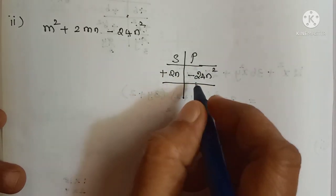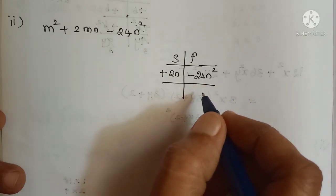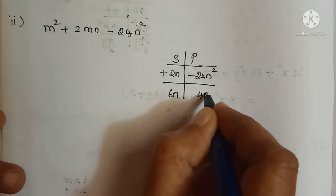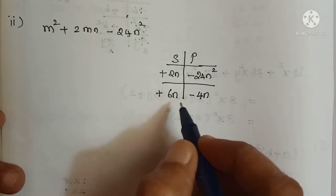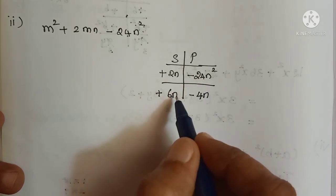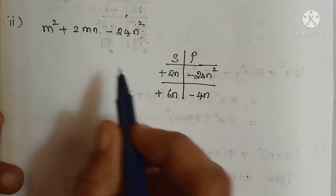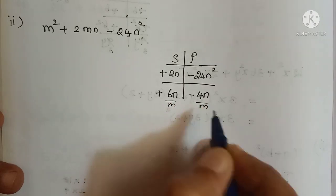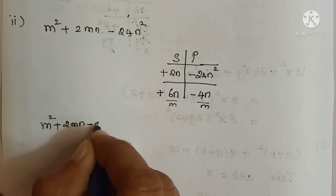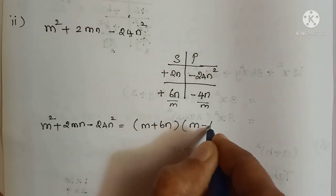Now we select two numbers from the 24 tables. Six fours are 24. With n as variable: 6n and 4n. Plus 6n minus 4n adds to 2n and multiplies to minus 24n squared — six fours are 24 and n into n is n squared. So we can write m squared plus 2mn minus 24n squared equals (m + 6n)(m - 4n).